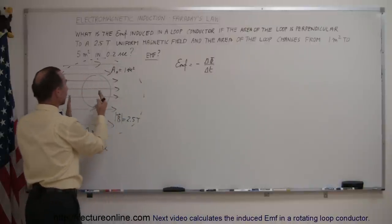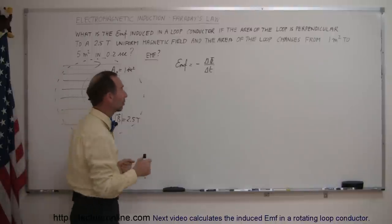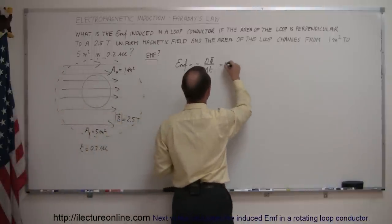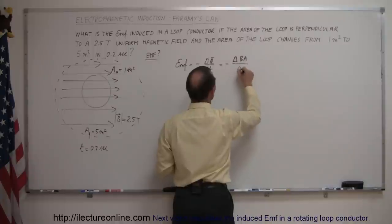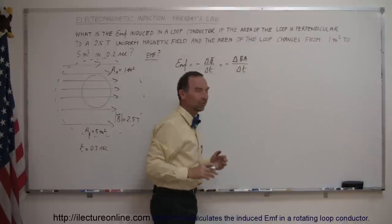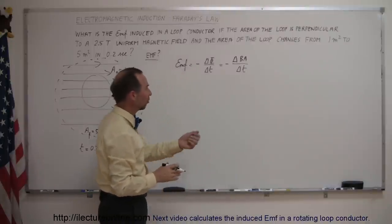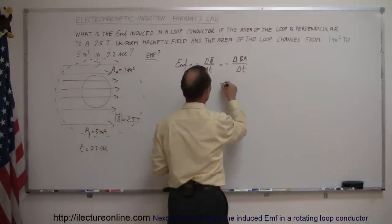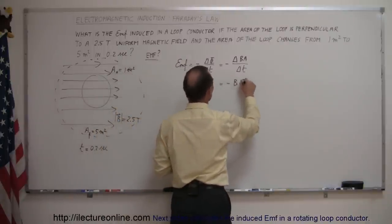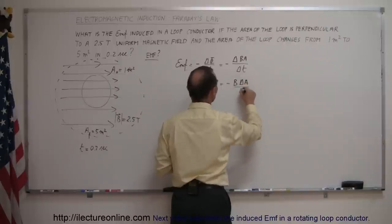Now, as long as it's perpendicular, we don't have to worry about the cosine of the angle between them. So this is equal to minus the change in B times A over time. And in this case, the magnetic field is not changing, so we can move the magnetic field out. So this is equal to minus B times the change in the area over time.